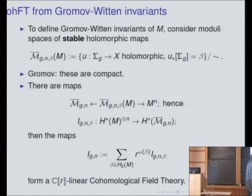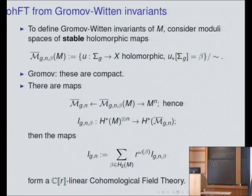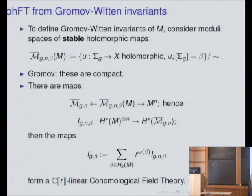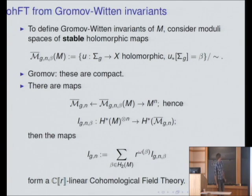If you sum these maps over all classes in H2 with some formal variable keeping track of the symplectic area of these curves, you get something that satisfies the axioms of a cohomological field theory. It's important to include this formal variable because compactness of these moduli spaces only works if you have some bound on the symplectic area. In what sense the A and B models are equivalent: thinking just about genus 0, they should be equivalent up to formal change of variables as R-linear cohomological field theories at genus 0, or equivalently as Frobenius manifolds.